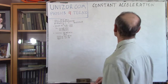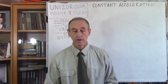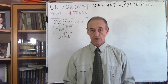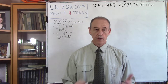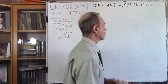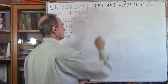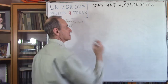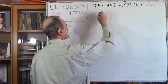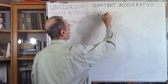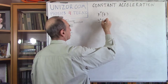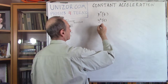So let's go to constant acceleration. What is constant acceleration? Obviously, that's when acceleration is constant. And what is acceleration? It is the second derivative of the coordinate functions of time.